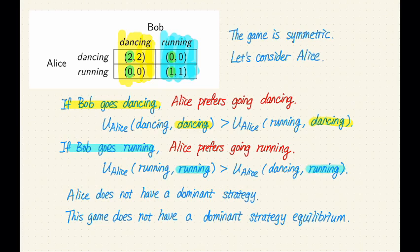So what's happening here is that depending on Bob's action, Alice has different preferences. If Bob chooses to go dancing, Alice prefers dancing. If Bob goes running, then Alice prefers running.